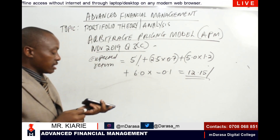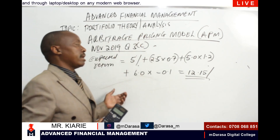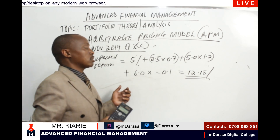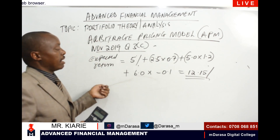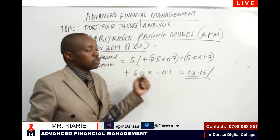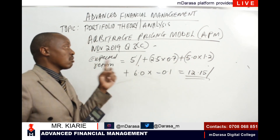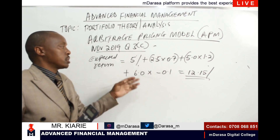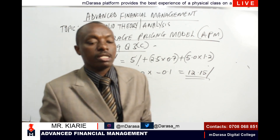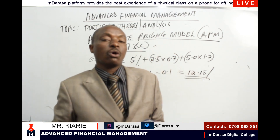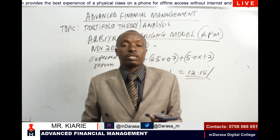So basically, that is how you apply the arbitrage pricing model or theory to determine the required rate of return of various portfolios. The major difference when it comes to computation is that APM is multi-factor while CAPM is a single-factor model — as seen here using three factors. That is how we go about arbitrage pricing theory or model, and until we meet next time, have a nice time. Thank you.